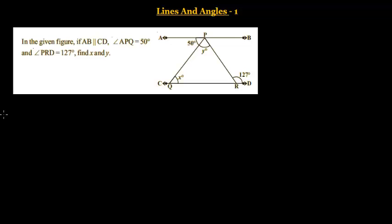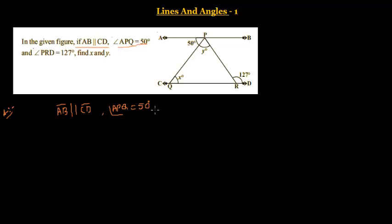Now let us solve this question. Given: AB parallel to CD, angle APQ is equal to 50 degrees, angle PRD is equal to 127 degrees. We have to find the values of X and Y, that is X = ? and Y = ?.